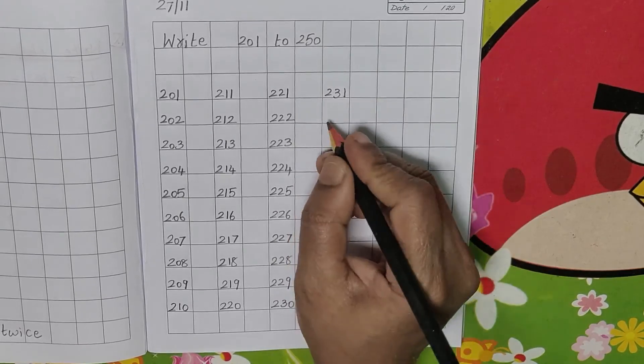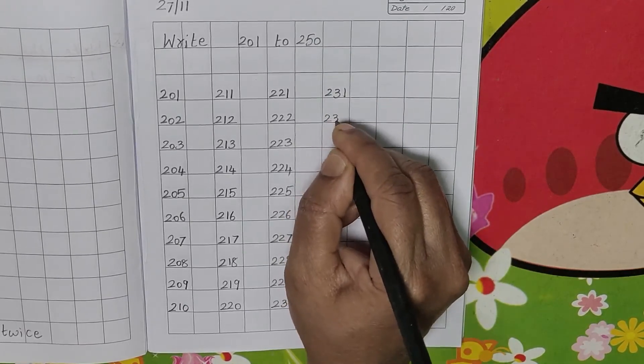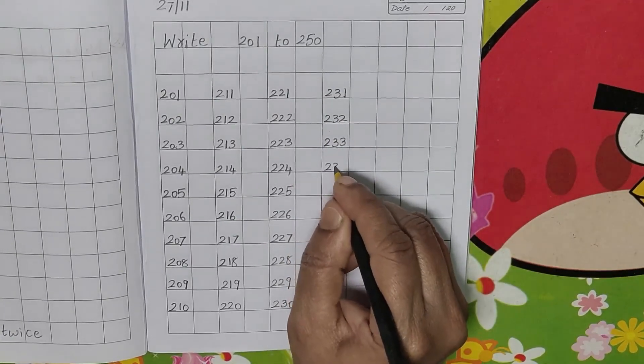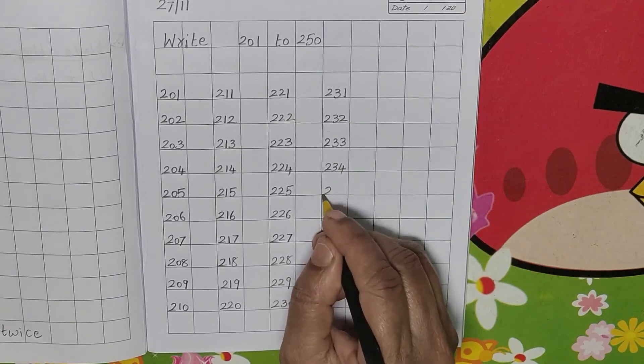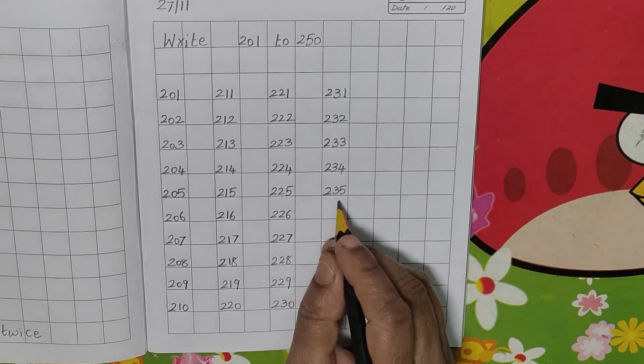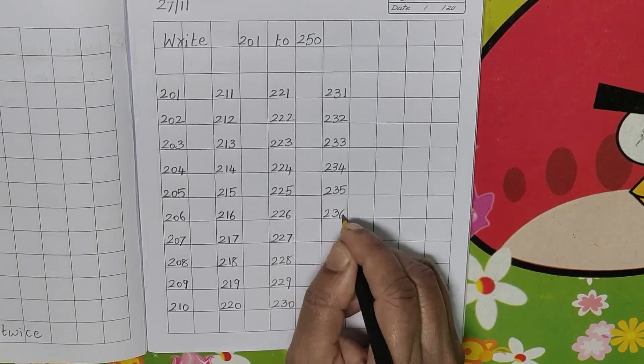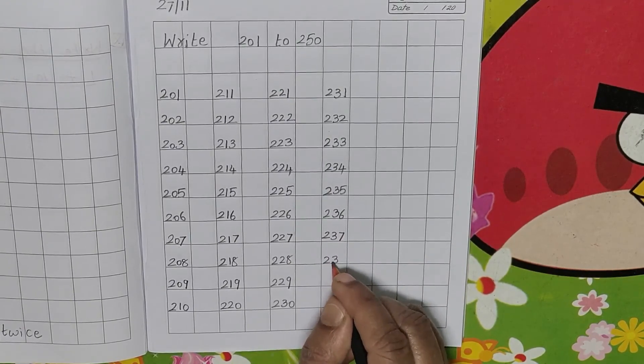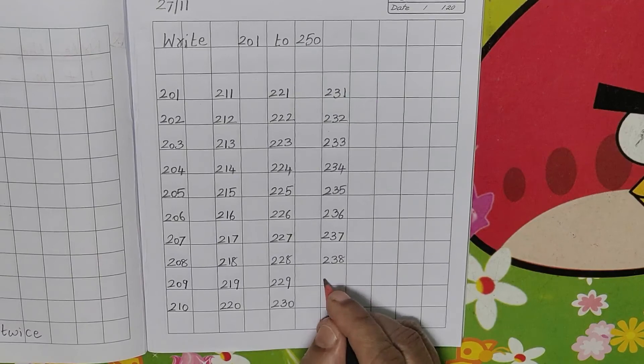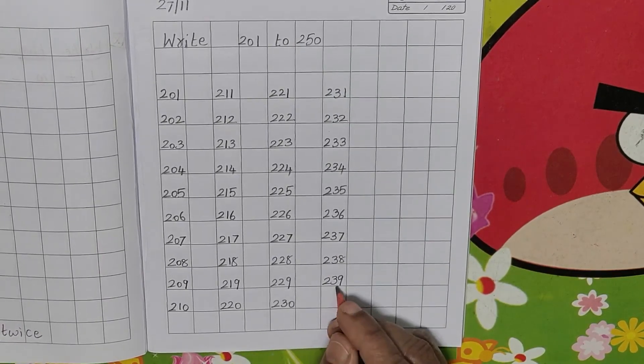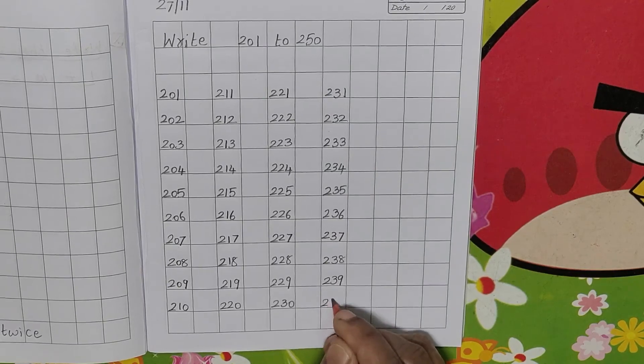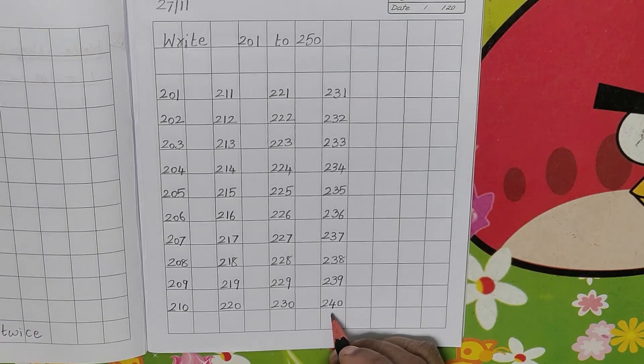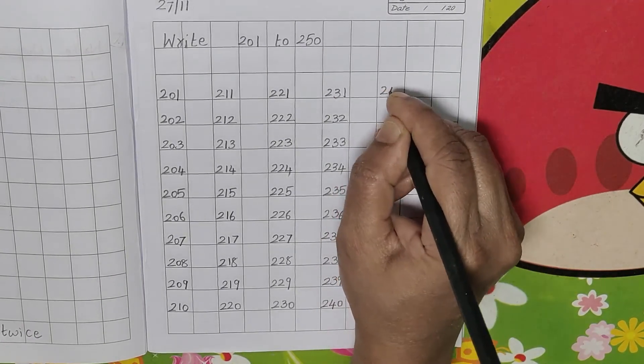Write 231, 232, 233, 234, 235, 236, 237, 238, 239. After 239, 240. After 240, leave one line.